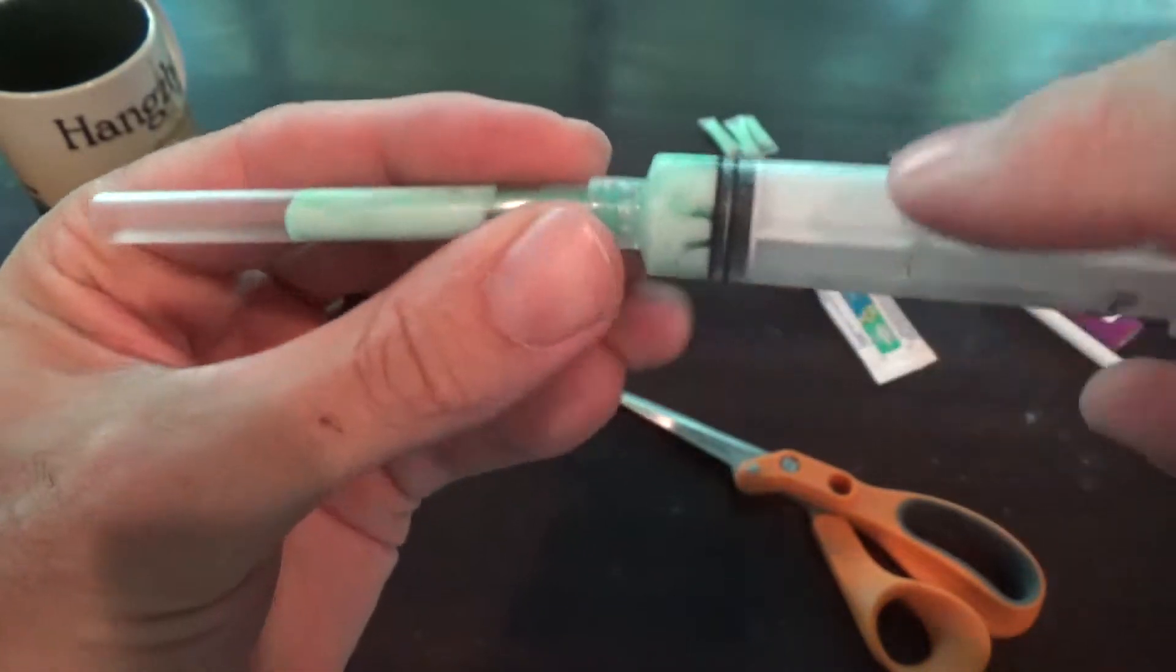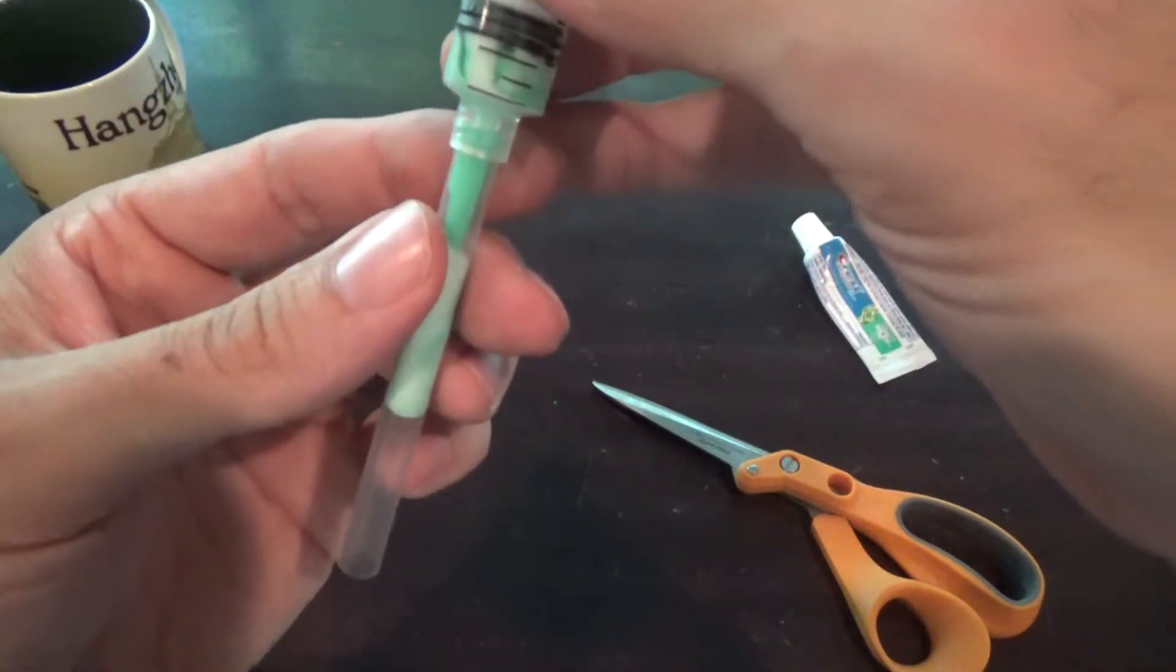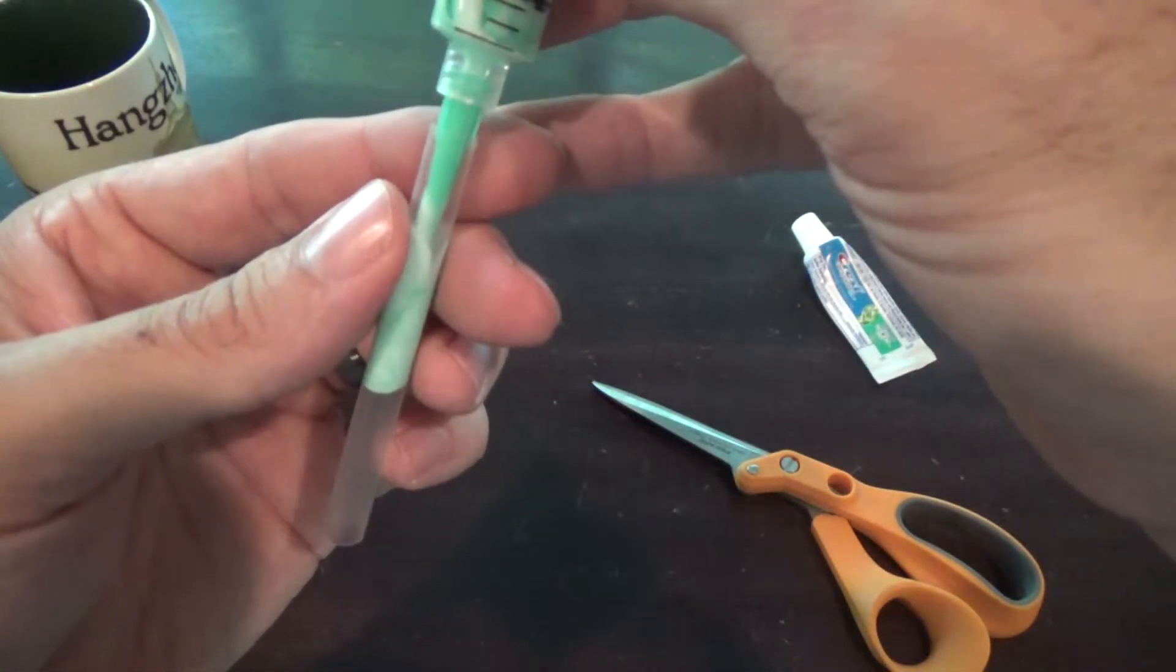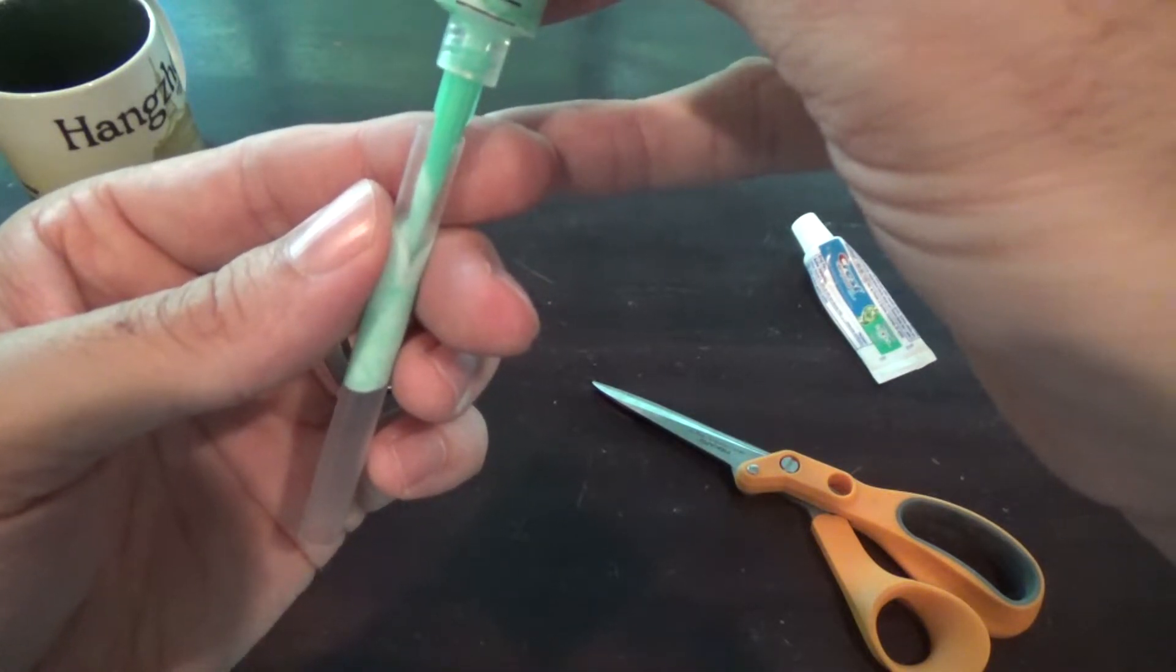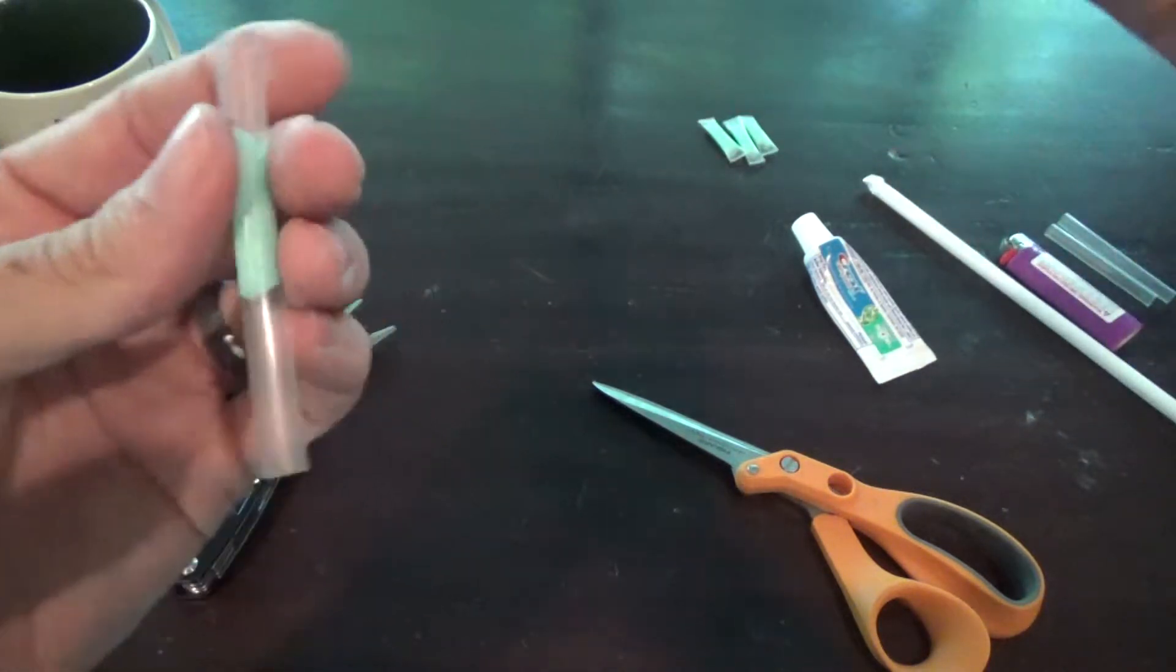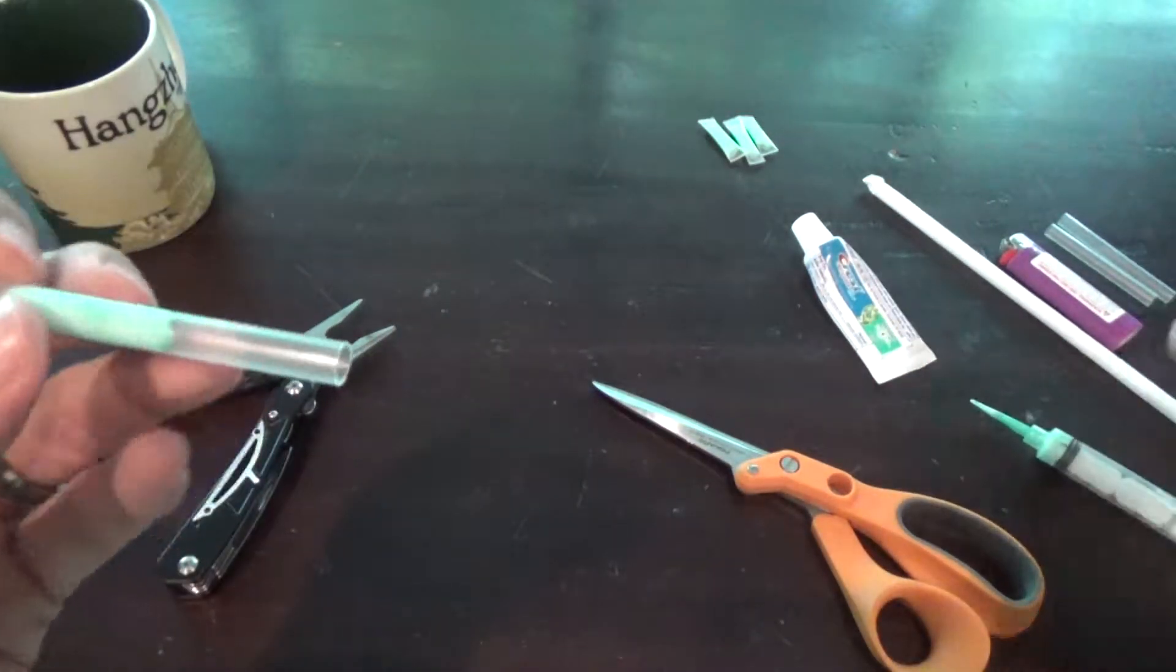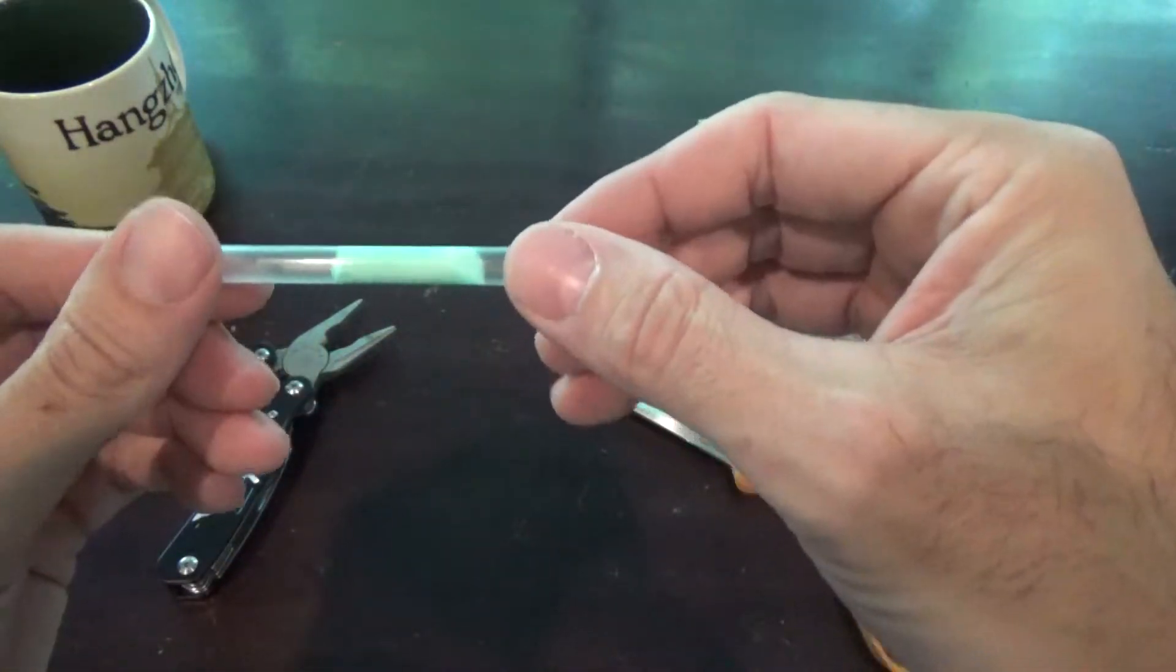You want to put about how much you use for one serving of toothpaste. And when you pull it back out, you want to go slow and make sure that you don't hit the edge of the straw, because if you try and seal it with any substance on it, it's not going to seal the right way. So, got the toothpaste in there.